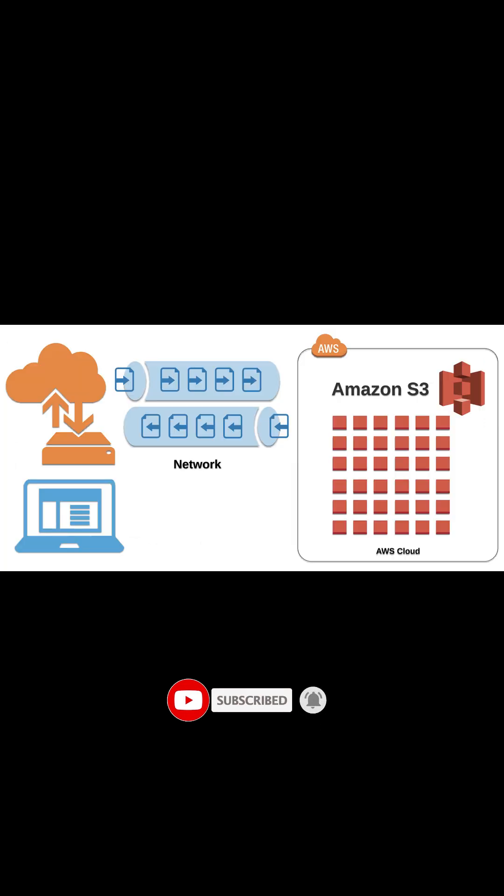To store your data in Amazon S3, you first create a bucket and specify a bucket name and AWS region. You can store any number of objects in the bucket and can have up to 100 buckets in your account.